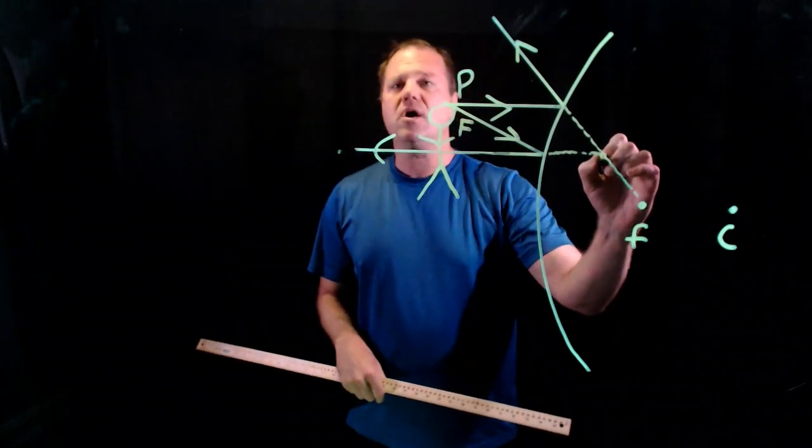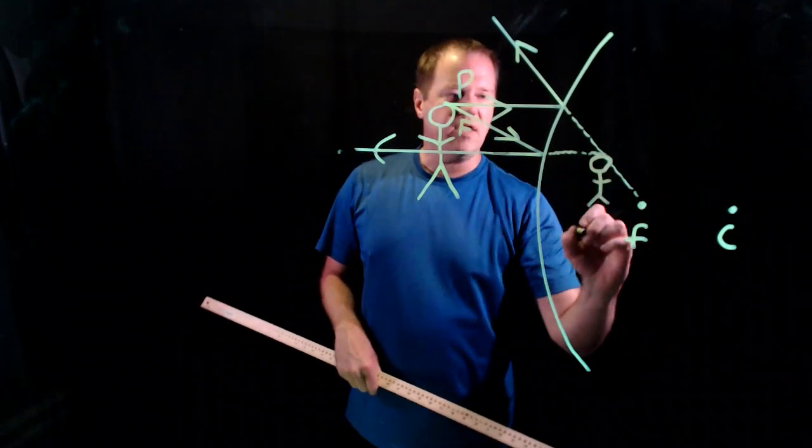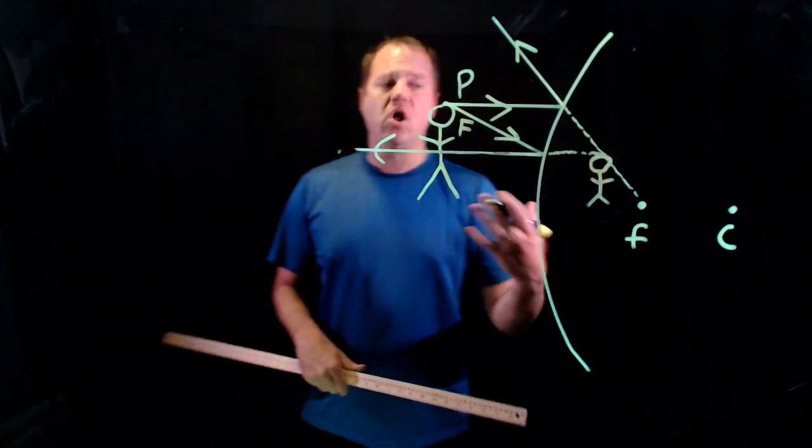Which we write here, and then extrapolating to the rest of the person's body, I would have something like this. So we get a smaller image.